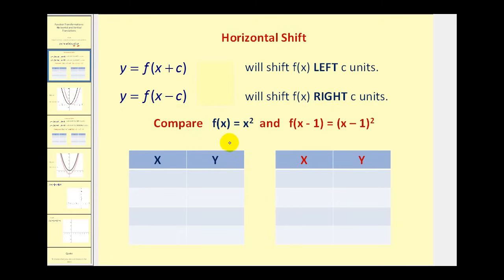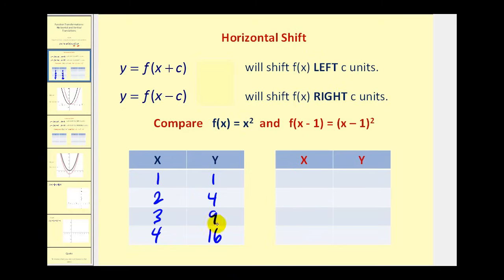One way to get a feel for this would be to compare a table of values for F of X and F of the quantity X minus 1. Let's choose X equals 1, 2, 3, 4. To find Y, we just square X for F of X, giving us 1, 4, 9, and 16. For F of X minus 1, we subtract 1 from the input and then square it: 1 minus 1 squared is 0, 2 minus 1 squared is 1, 3 minus 1 squared is 4, and 4 minus 1 squared is 9.